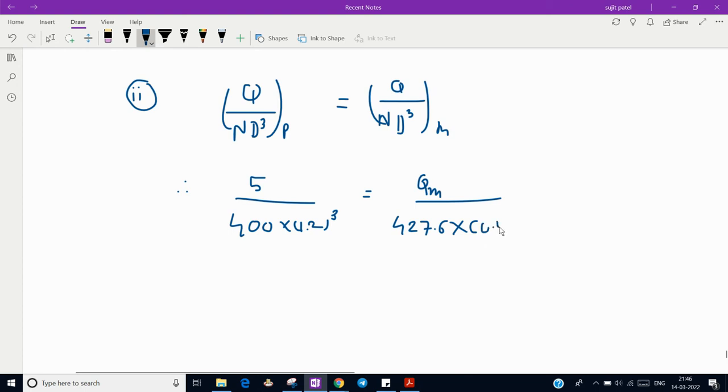Equals discharge of model we have to find, rpm we just found out is 427.6, and diameter is 0.3 cubed. So when you solve this, you will get discharge 0.083 meter cube per second. This is answer of our second quantity.